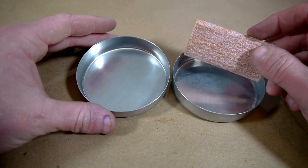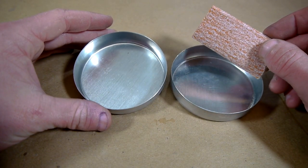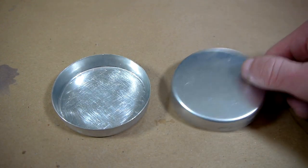With the edges of both caps filed smooth, the inside of each is given a rough surface with a piece of sandpaper, as well as the bottom side of one of them.